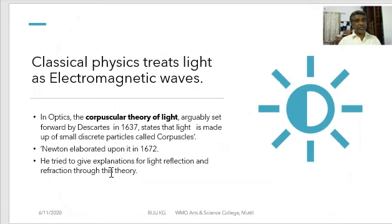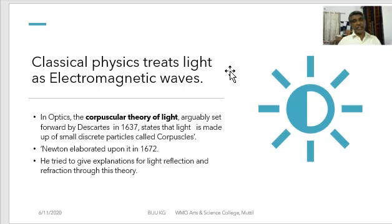In the same way, when we consider light — light is considered as electromagnetic waves in classical physics. The first theory regarding light was the corpuscular theory, first proposed by Descartes in 1637. He proposed that light is made up of small discrete particles called corpuscles. Newton also worked on this model, and in 1672 he tried to give an explanation for light reflection and refraction through this theory.